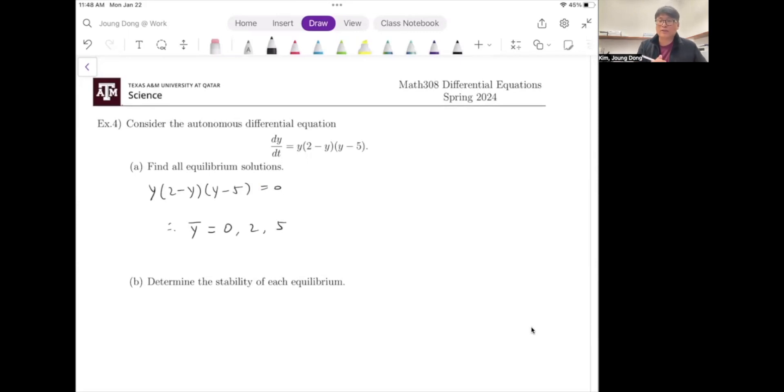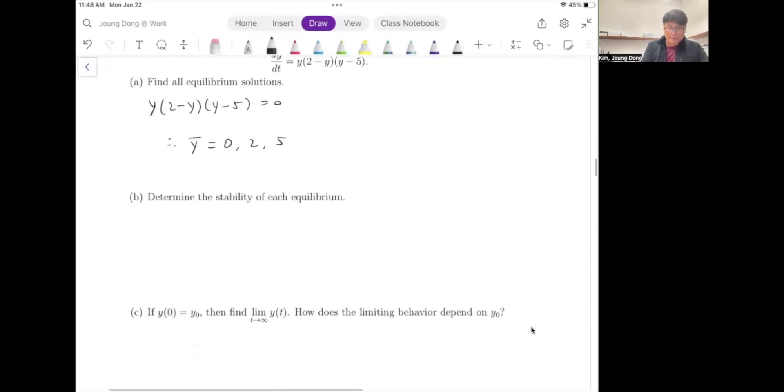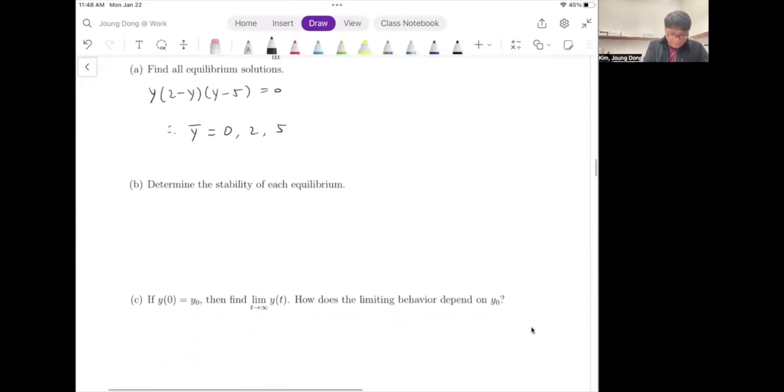Once you find this one, we're going to jump to the phase line portrait. The phase line, horizontal line. This is y value, not t value. And then just pointing all your equilibrium solutions. Then let's talk about less than 0 first. Then what happens?